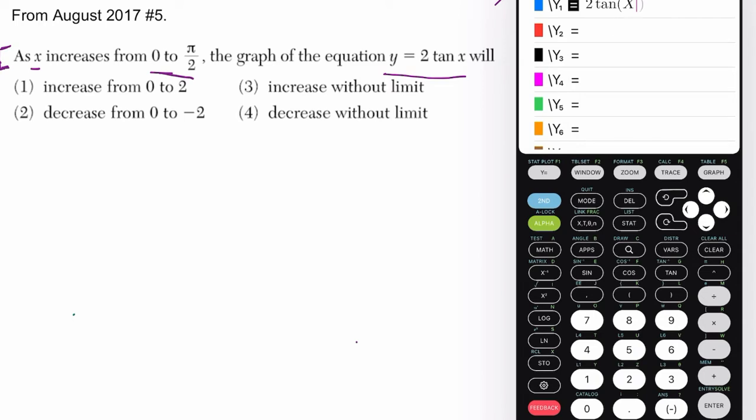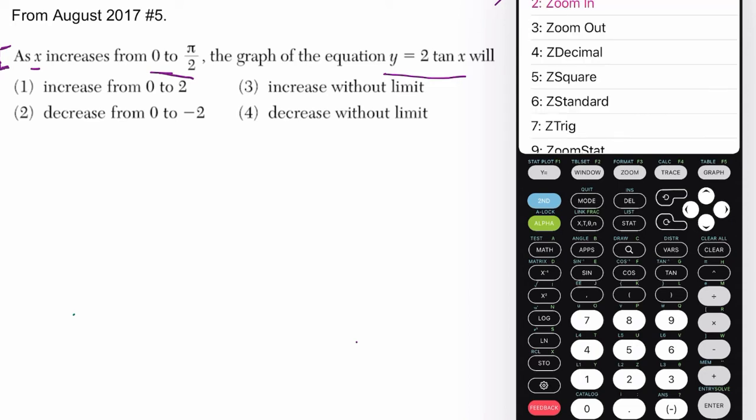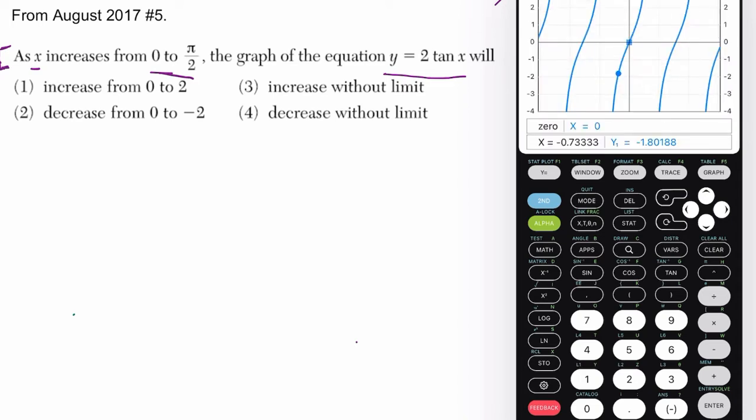So to get to this window you see, I pressed y equals, I typed in, I'll just retype it, 2 times the tangent of x. Now when you graph it, you'll see something like this. You'll see repeating cycles of the tangent wave, and sometimes it's nice to press zoom, and you can go to choice 6, which is standard, or 7, which is for trig.